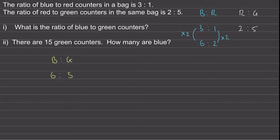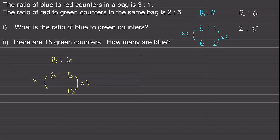For part two, if there are 15 green counters, how many are blue? We can multiply by three to make 15 green, and do the same to the blue side to get 18 blue. So there will be 18 blue counters. Thank you very much for watching, I hope you found that useful. Thanks again and take care.